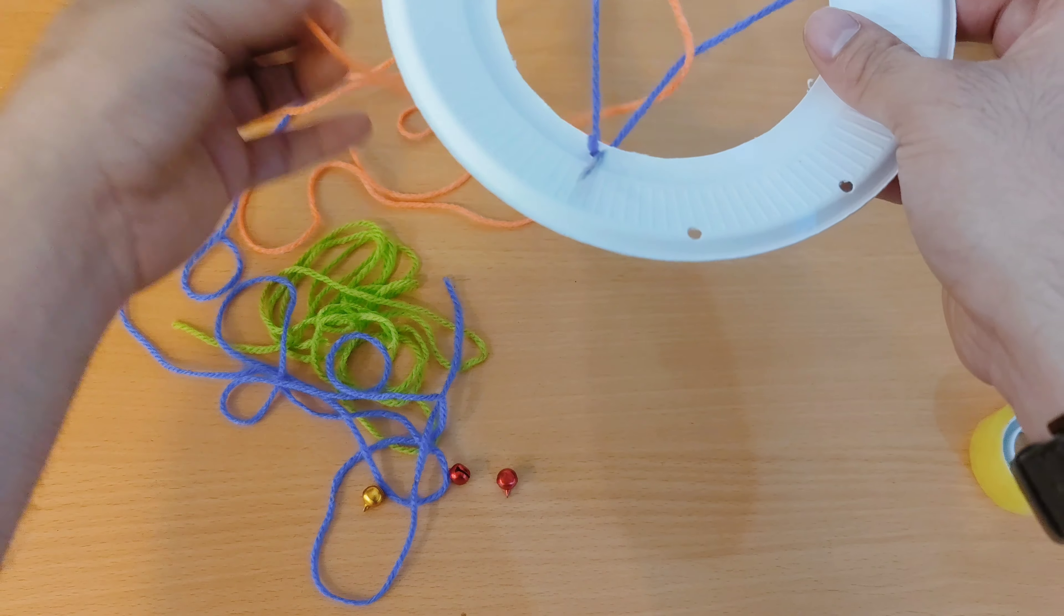I made my dream catcher look beautiful by coloring the paper plate. And if you have feathers and beads at home, you can add them to the tails. And that's it for this video.